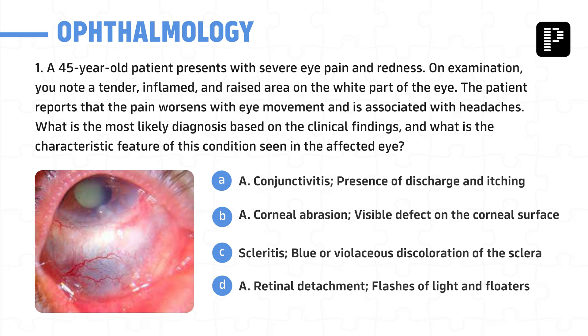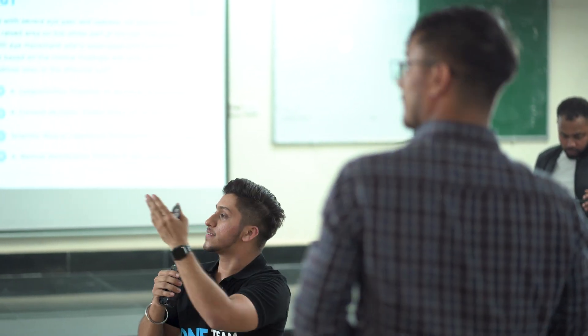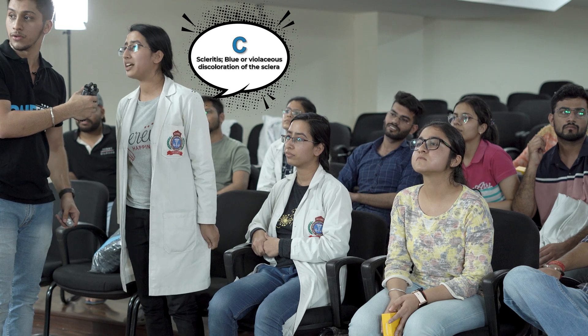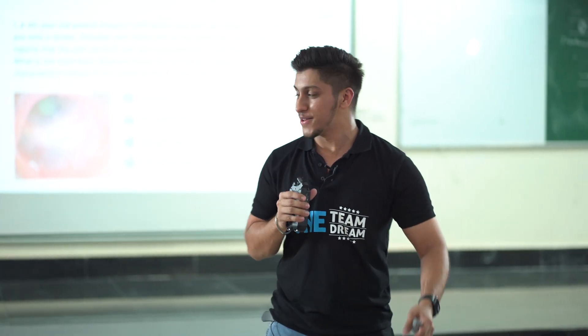A 45-year-old patient presents with severe eye pain and redness. On examination, a tender, inflamed, raised area on the white part of the eye is noted. Pain worsens with eye movement and is associated with headaches. What is the most likely diagnosis and the characteristic feature seen in the affected eye? Answer: scleritis — bluish discoloration of the sclera. Both teams have one point.